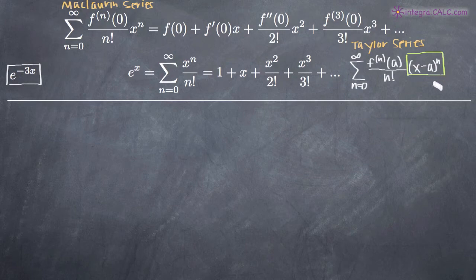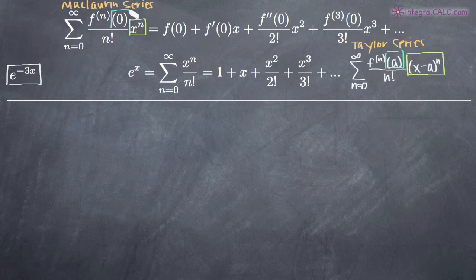Well when a equals zero as it does in the Maclaurin series, of course this minus a is just going to go away and we're going to be left with x to the n which is what we have up here in the Maclaurin series. And then similarly, we're going to have this a here that becomes zero up in the Maclaurin series formula.